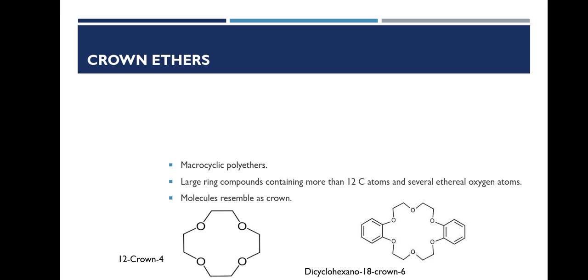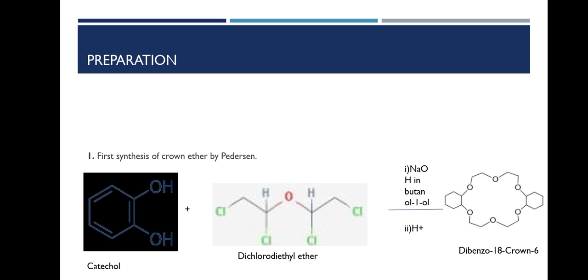Next, we can discuss the preparation of crown ethers. First, the first synthesis of crown ethers was due to Pedersen. He prepared dibenzo-18-crown-6 by the reaction of catechol with dichlorodiethyl ether in alkaline medium followed by acidification. He was awarded the Nobel Prize for Chemistry for the synthesis of crown ethers.